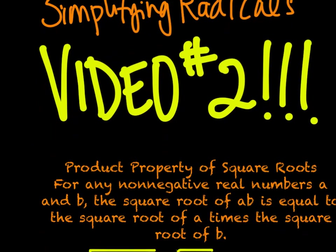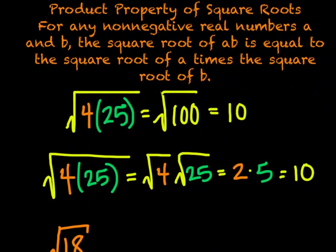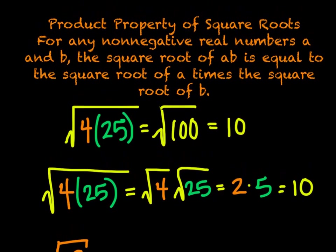To start out with, the product property of square roots is: for any non-negative real numbers A and B, the square root of A times B is equal to the square root of A times the square root of B.